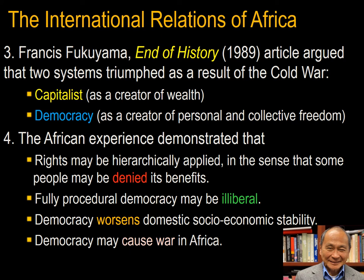Francis Fukuyama wrote a well-known article called 'The End of History' in 1989, in which he argued that there were two systems that triumphed as a result of the Cold War with no other possible competing system: capitalism as a creator of wealth, and democracy as a creator of personal and collective freedom.